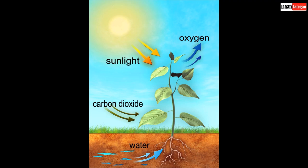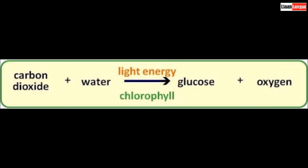Photosynthesis, then, is the process where a green plant uses radiant energy from the sun together with carbon dioxide and water in a series of chemical reactions to make glucose. This can be simplified in the following chemical word equation.